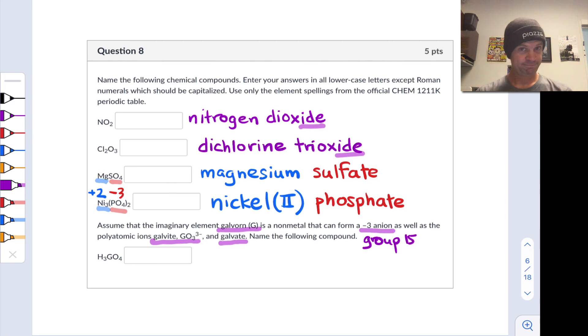Before we move on, let's think about what Galvate would be based on the nomenclature conventions of oxyanions. Remember, hypo-ite corresponds to the smallest number of oxygens in an oxyanion series. Ite is one more oxygen than that. Ate is one more oxygen than that. So Galvate has one more oxygen than Galvite and equivalent charge. And so the formula of the Galvate anion must be GO4^3-. This is going to help us address the problem, which is why I mentioned it here.